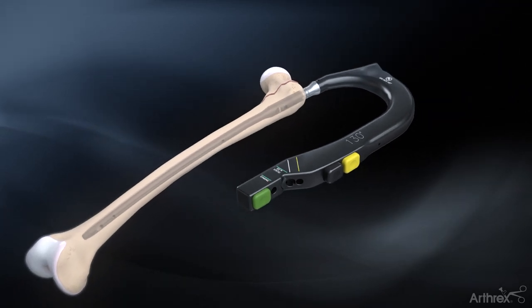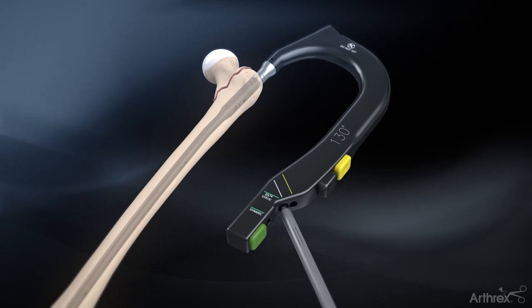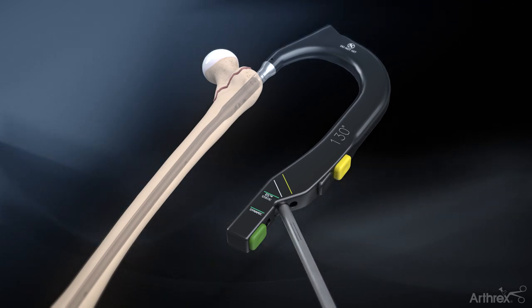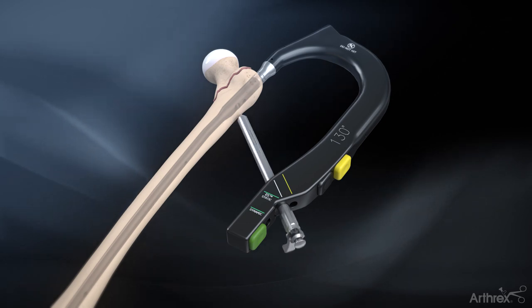Once the desired nail depth has been achieved, insert the lag screw triple sleeve assembly through the targeting arm by pressing the black button. Slide in the assembly until it contacts the lateral cortex of the femur.